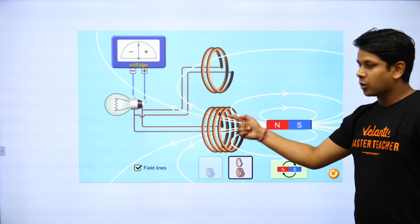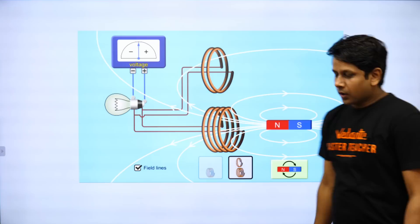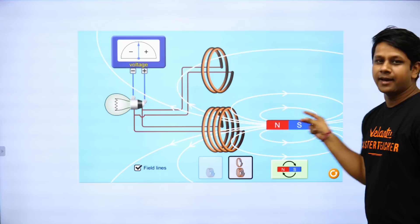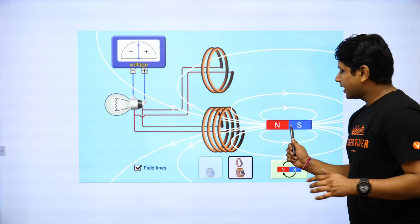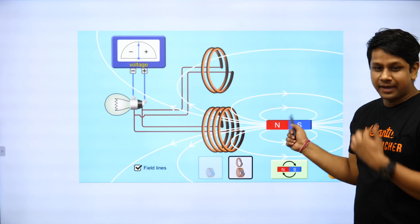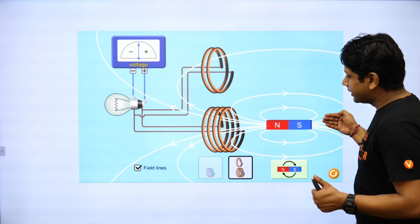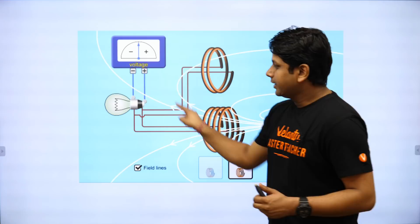We have to study EMI. If you have a coil connected with a bulb, and you move a magnet near the coil, the bulb will glow. This is electromagnetic induction. The moving magnet produces a changing magnetic field, and when the magnetic field changes, a current is produced — this is called electromagnetic induction.